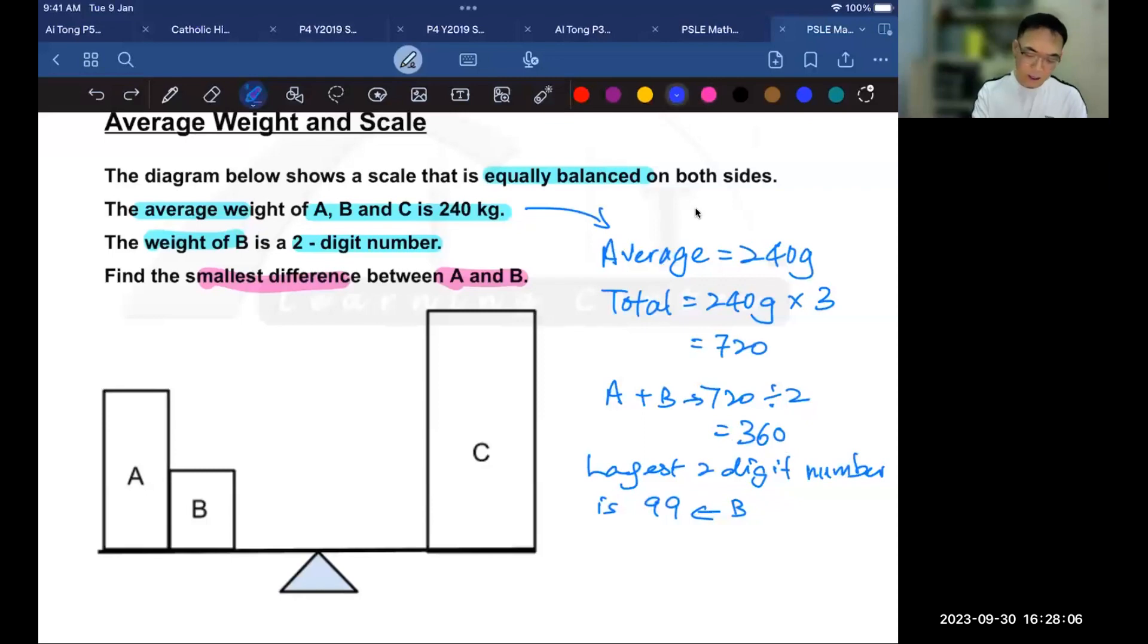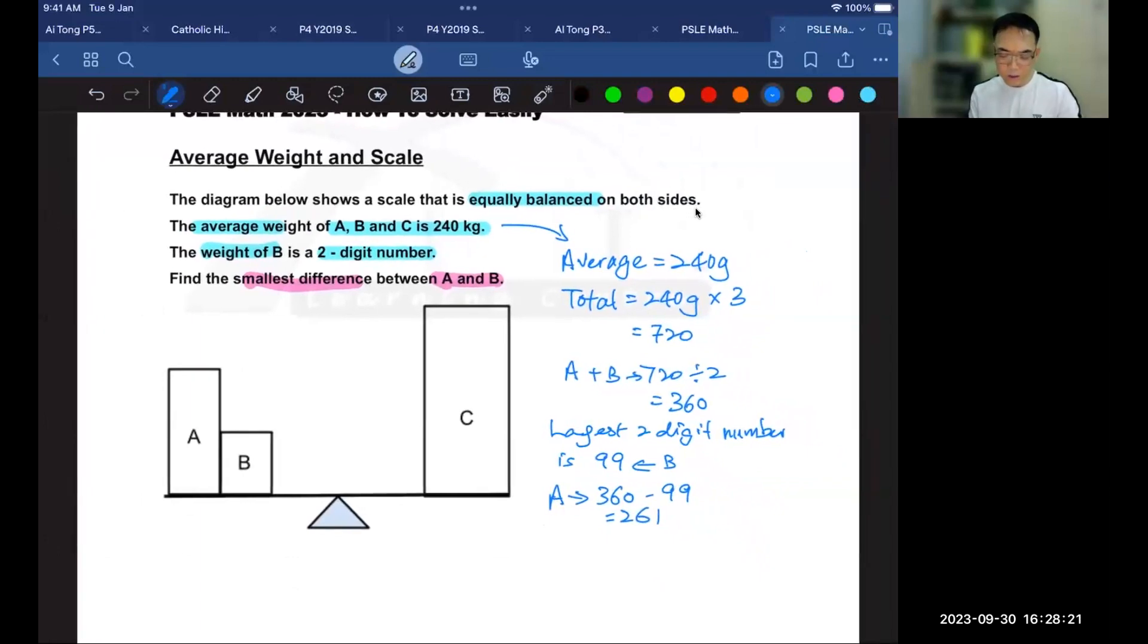To find the weight of A, I'll take the total of A and B, subtract the weight of B, and I get 261 grams. So 261 is the weight of A,